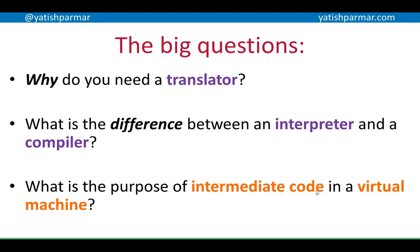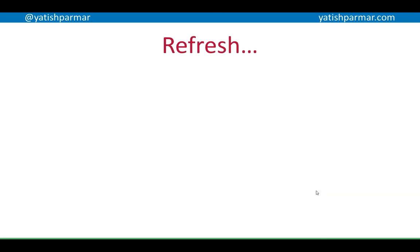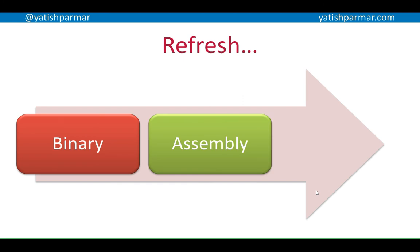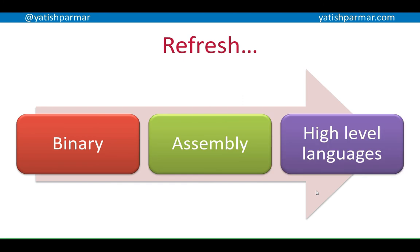So the big question is: why do you need a translator? What is the difference between an interpreter and a compiler? Then, what is the purpose of intermediate code in a virtual machine? The quick refresh: people used to write programs in binary, which was directly understandable by the machine architecture. They then moved on to assembly language, which was easier for humans to understand. And then finally, the use of high-level languages, which was an increased abstraction, and we could write more complex lines of code performing several instructions.